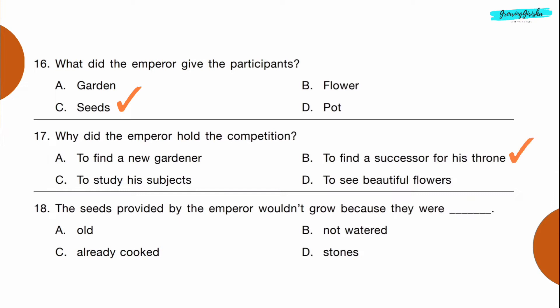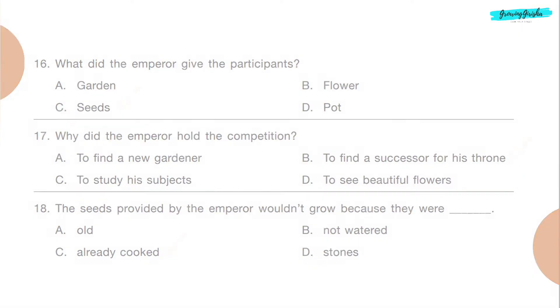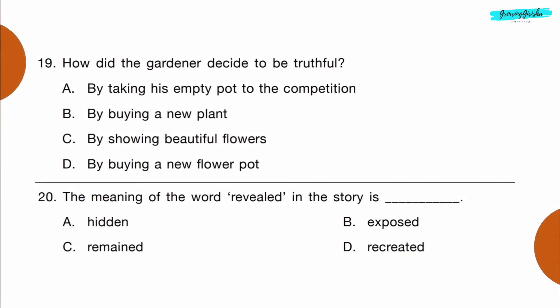Question 17: Why did the emperor hold the competition? Option B: to find a successor for his throne. Question 18: The seeds provided by the emperor wouldn't grow because they were dash. Option C: already cooked.